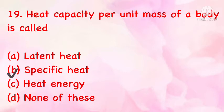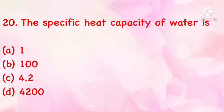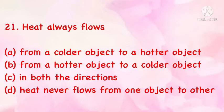The specific heat capacity of water is: (a) 100, (b) 4.2, (c) 42, (d) 4200. The correct answer is (d): 4200. Heat always flows: (a) from a colder object to a hotter object, (b) from a hotter object to a colder object, (c) in both directions, (d) never flows. The correct answer is (b): from a hotter object to a colder object.